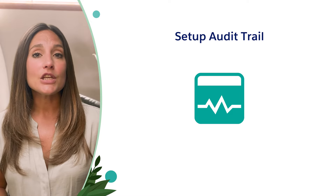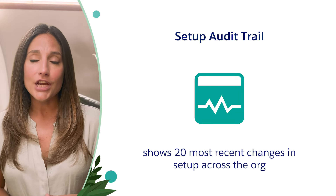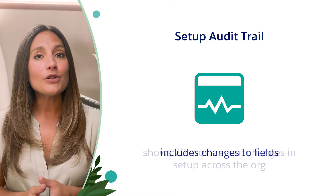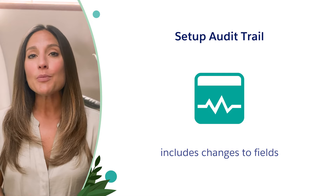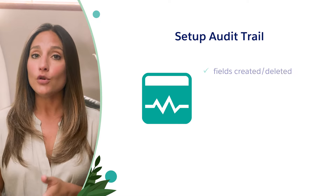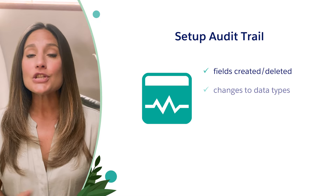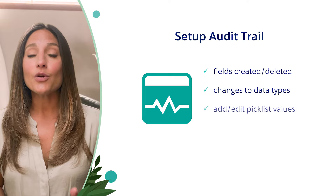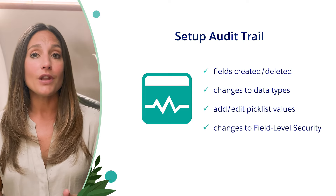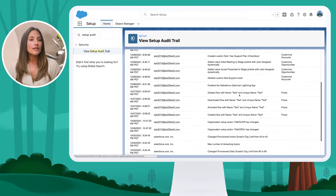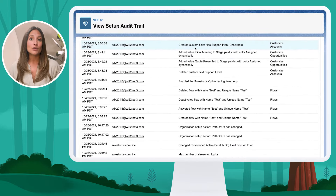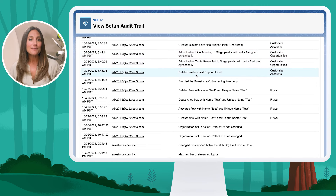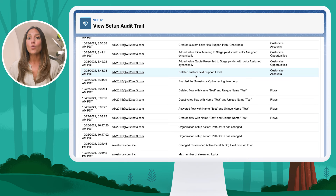The Setup Audit Trail shows us a history of our 20 most recent changes across the org, and this also includes changes to our fields. It helps us track customization changes: new fields being created or deleted, changes to field data types, adding or editing picklist values, and changes to field-level security. For example, in this org you can see that a new custom field was created, we have changes to our Opportunity Stage picklist values, and we have deleted a custom field. These are what I call configuration changes to our fields that help us influence the quality of our data.